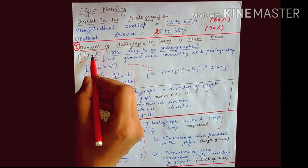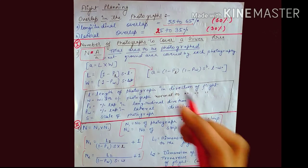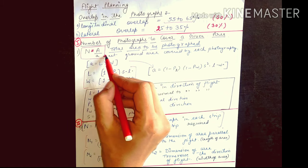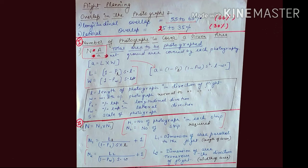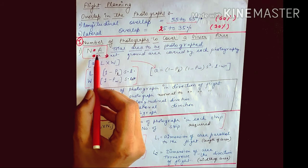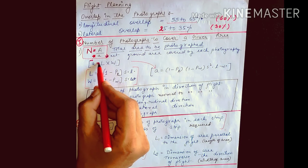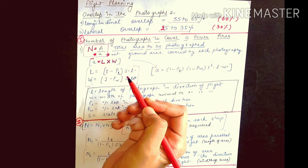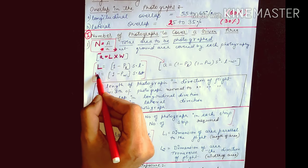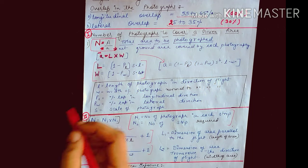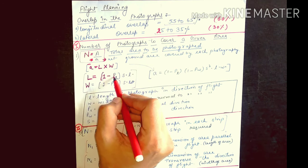The formula n = A / a gives the number of photographs. Here A is total area and small a is the net ground area covered by each photograph. The value of small a is calculated as L × W, where L is the length covered by a single photograph and W is the width. L = (1 − PL) × S × l, where PL is the percentage lap in longitudinal direction (end lap, e.g. 0.6 for 60%) and small l is the length of the photograph in the direction of flight.